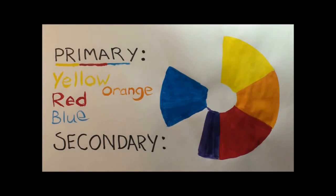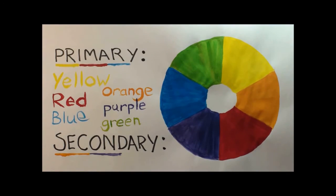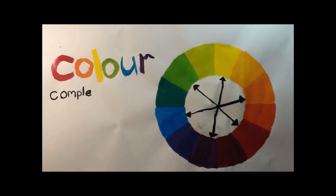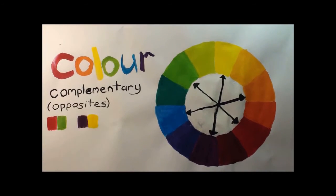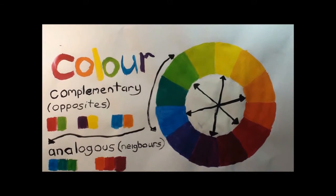Secondary colours. Orange. Purple. Green. Colours can be complementary. Opposites on the colour wheel. Or analogous. Neighbours.